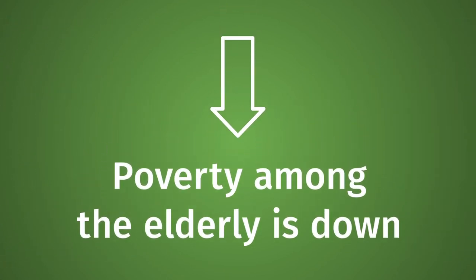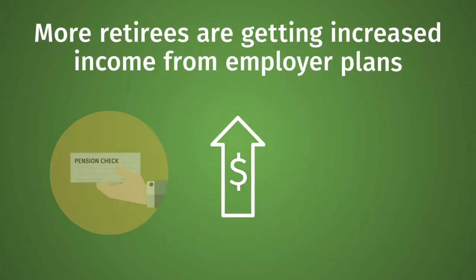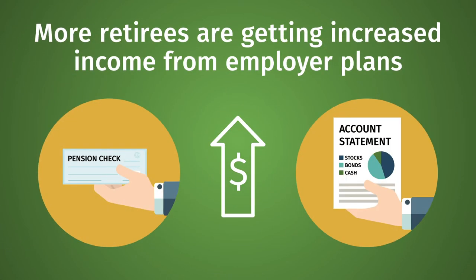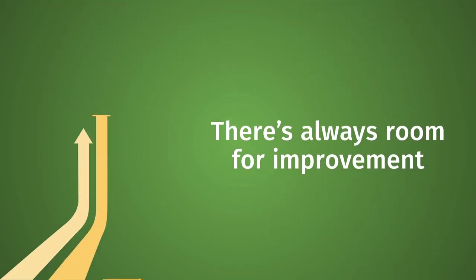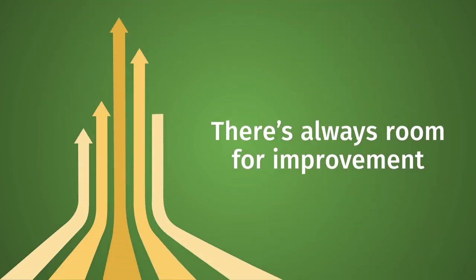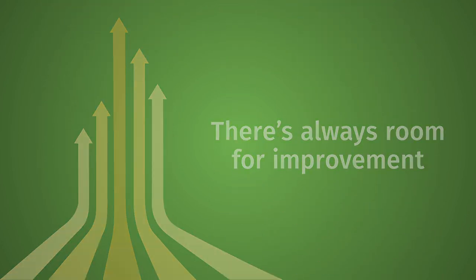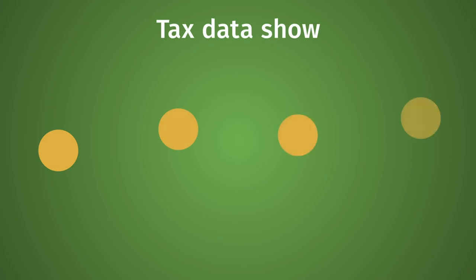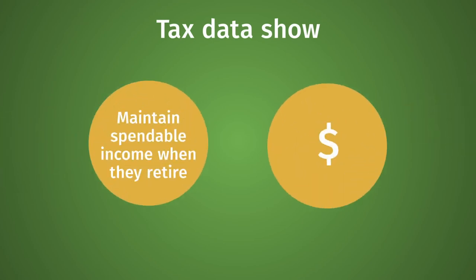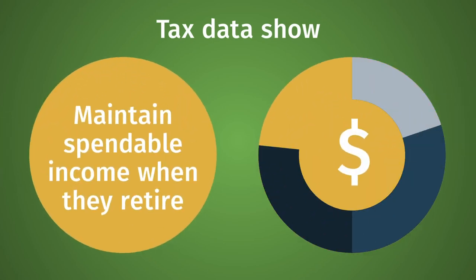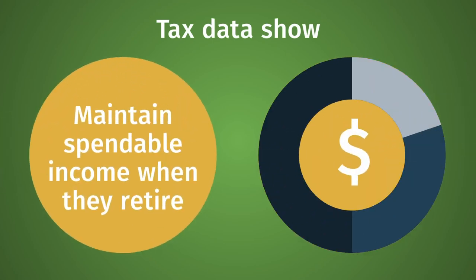Poverty among the elderly is down, and more retirees are getting increased income from employer plans. There's always room for improvement, but tax data show that most workers are maintaining their spendable income when they retire.